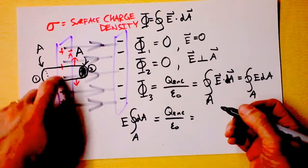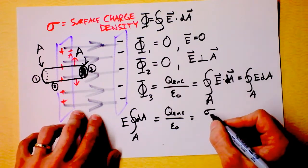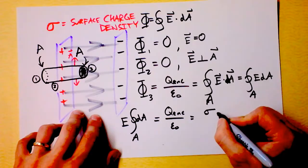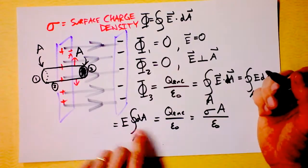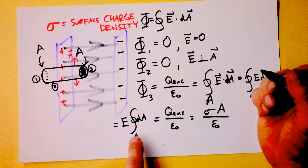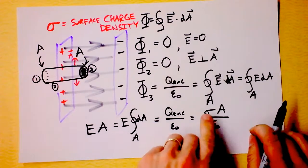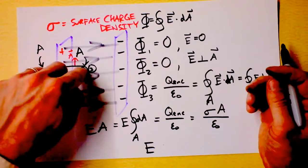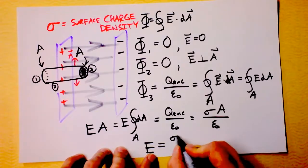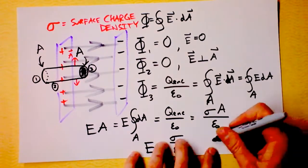The enclosed charge is the surface charge density sigma times the area of the circle. On the left side, E times area equals sigma times area over epsilon naught — the areas cancel out, so it doesn't matter the size of the Gaussian surface. We find that the electric field inside a parallel plate capacitor is simply sigma divided by epsilon naught. Isn't that beautiful? Physics.